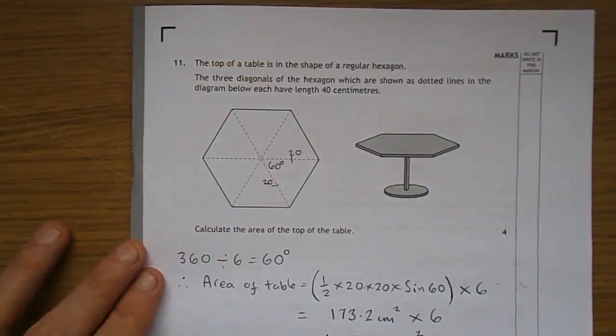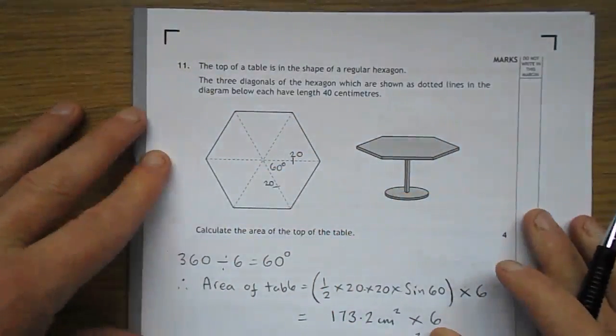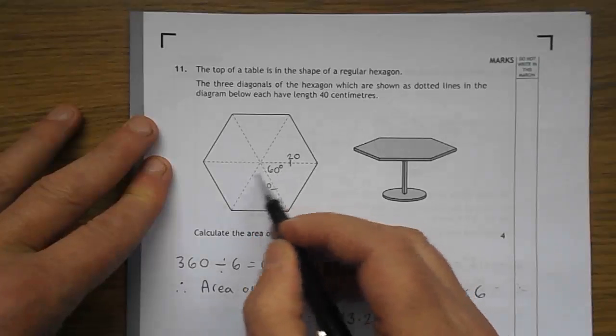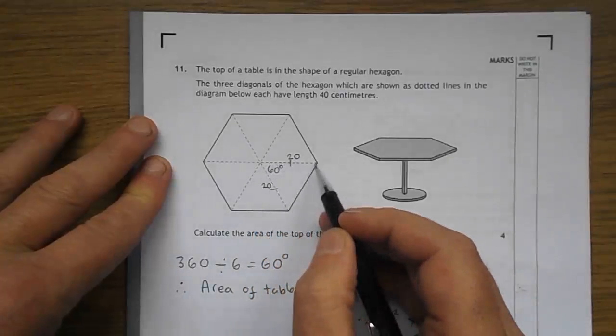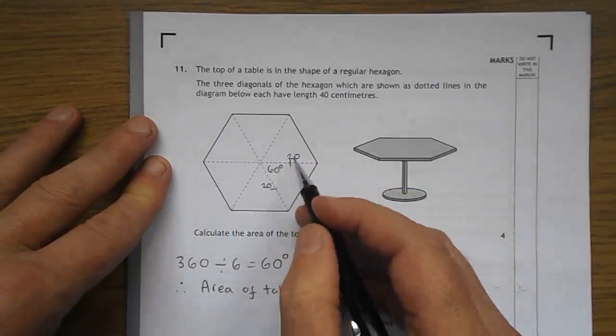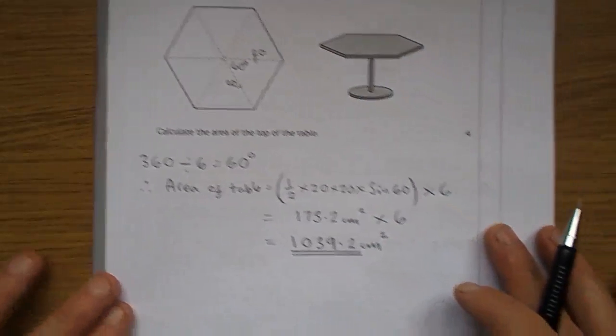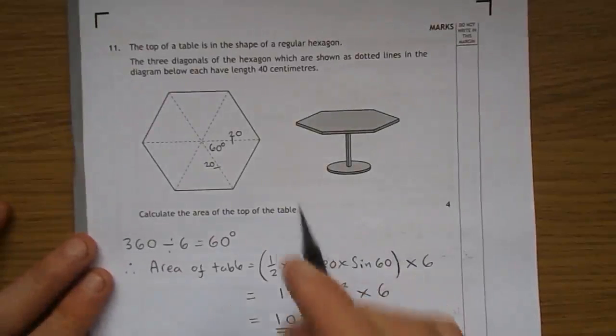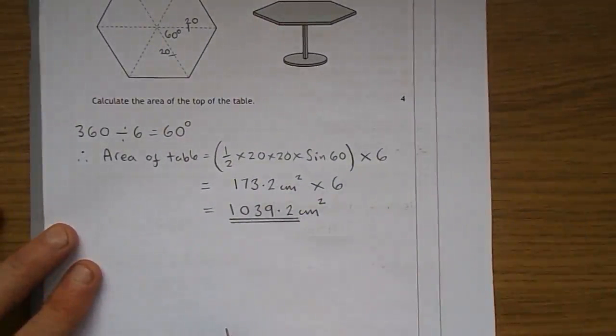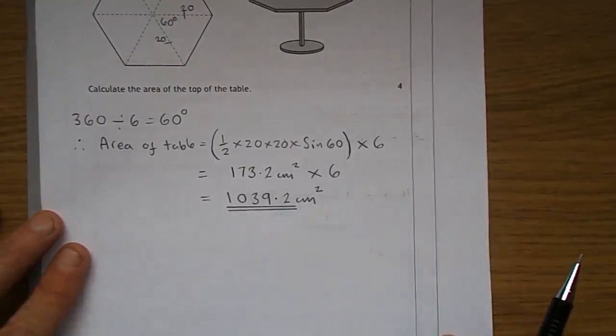So I'll look at 11. The top of a table to the shape of a regular hexagon. The three diagonals of the hexagon, one, two and three, you can see them there, each of length 40. So you just half it. You can see me doing a few wee scribbles here. There's 20, there's 20. 360 divided by six is 60. So you can see that this table top is made up of six isosceles triangles. 20, 20 and 60 degrees. So we're going to use the area of triangle formula to get the area of one of them. That's a half AB sine C. So it's a half times 20 times 20 times sine 60. I've written that there. Times it by six because there's six of them and you get 1039.2.